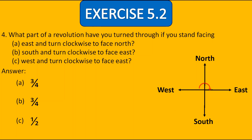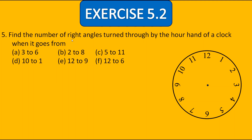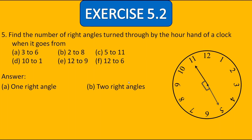Now the fifth question: Find the number of right angles turned through by the hour hand of a clock. For A, it goes from 3 to 6 — clearly making one right angle. For B, from 2 to 8 — it is making half of the clock, so two right angles. For C, from 5 to 11 — also half of the revolution, meaning two right angles. Two right angles means two times 90 degrees, which gives 180 degrees, and 180 degrees is half of a revolution.